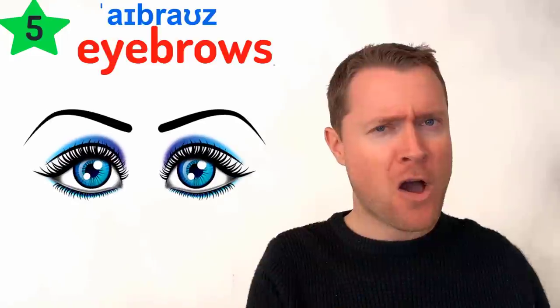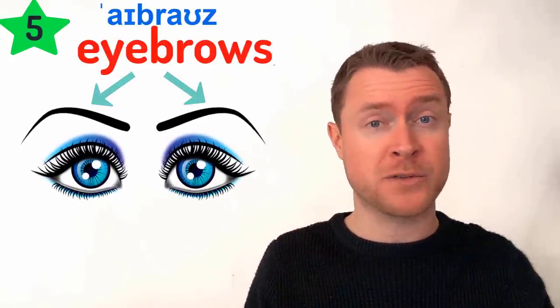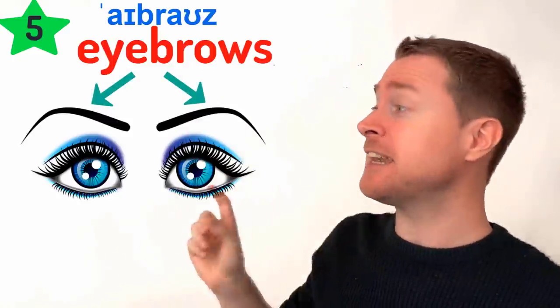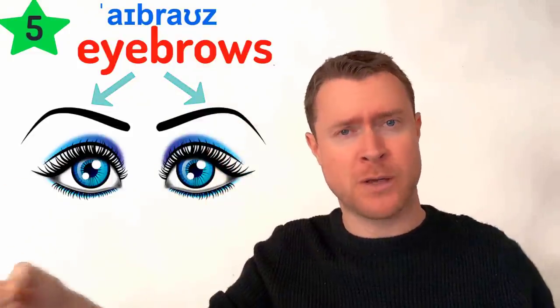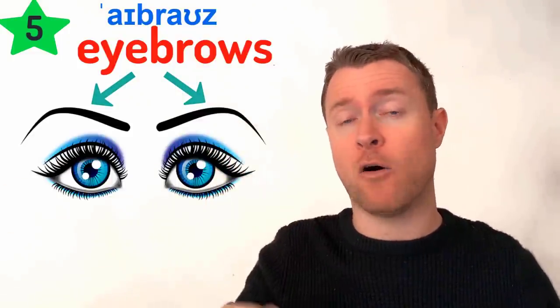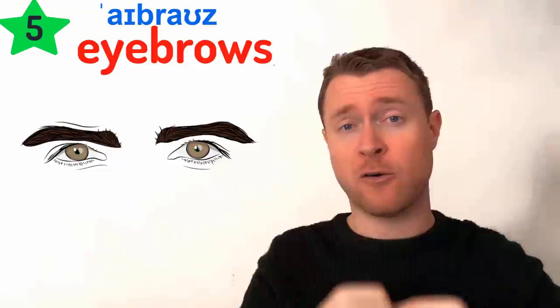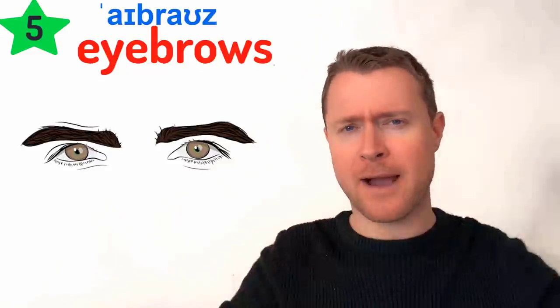If we go down our forehead, the next thing we come to is our eyebrows. Eyebrows — they are on the brow of our eyes. Their plural is eyebrows, but the singular is eyebrow. So one eyebrow, two eyebrows.